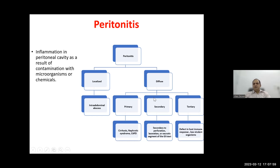Secondary peritonitis is secondary to structural, anatomical, or functional defects in the bowel — perforation, laceration, necrotic bowel segments, or blunt abdominal trauma. Tertiary peritonitis is rare, seen in patients with defects in host immune response; infecting agents are usually low-virulence organisms that do not cause infection in immunocompetent hosts.